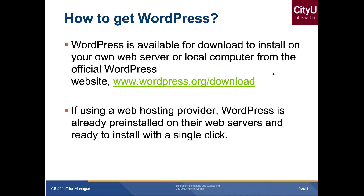To get WordPress, you go to the website and download it to your computer to start using it. If you allow people to access your network, you'd have a website up and running, though you can run it locally just to test things. If using a web hosting provider such as GoDaddy, Bluehost, or HostGator, WordPress is already pre-installed and you just need a single click to install it.